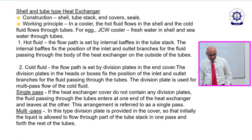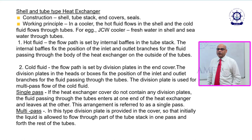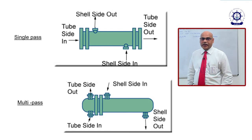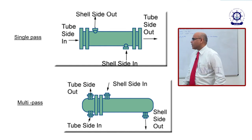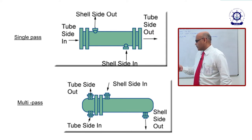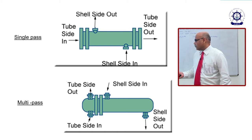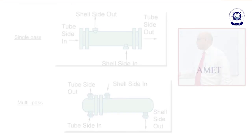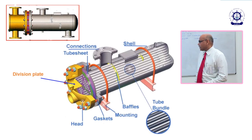What is the working principle? Generally, the hot fluid flows through the shell and the cold fluid flows through the tubes. There is single pass and multi-pass. In single pass, the fluid flows through the tubes and straight away comes out. In multi-pass, the fluid enters one side, takes a U-turn, and comes out the other side via a division plate.